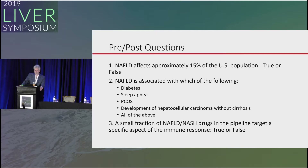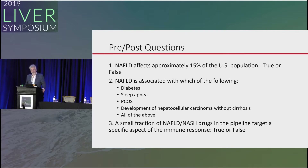NAFLD is associated with which of the following: diabetes, sleep apnea, polycystic ovary syndrome, development of hepatocellular carcinoma without cirrhosis, or all of the above? The answer is all of the above. The last question: a small fraction of NAFLD and NASH drugs in the pipeline target a specific aspect of the immune response — true or false?